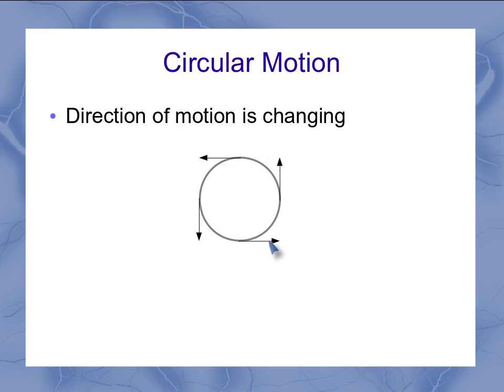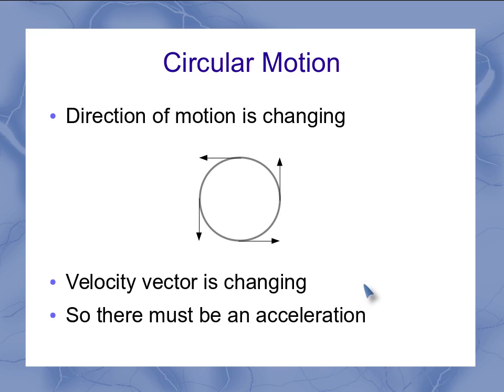So even if I'm going in uniform circular motion at the same speed, I still have a change in direction. And that means the velocity vector is changing. And a changing velocity vector means there is an acceleration.